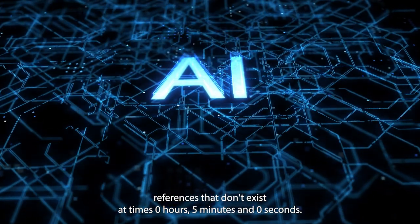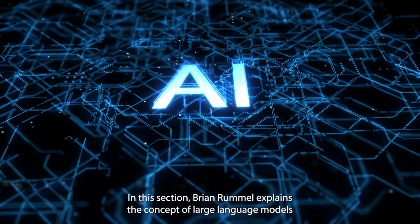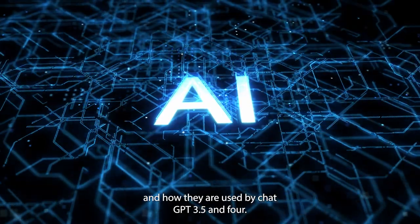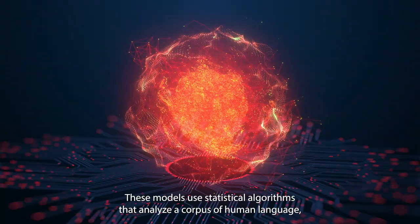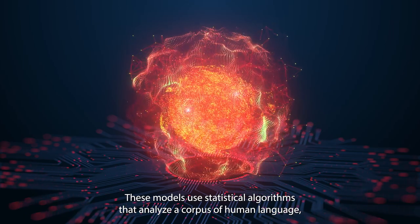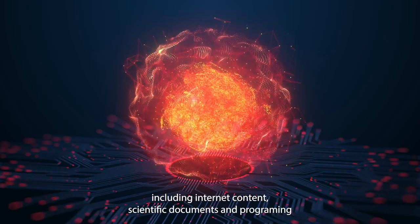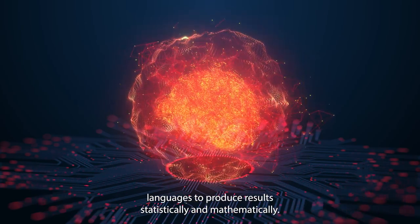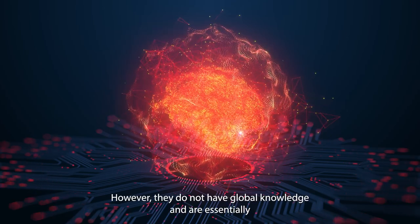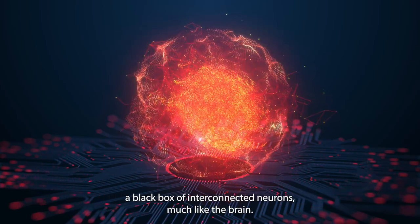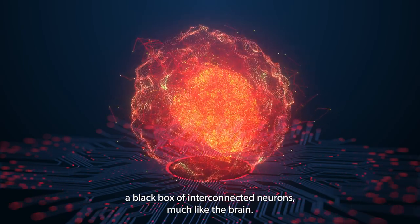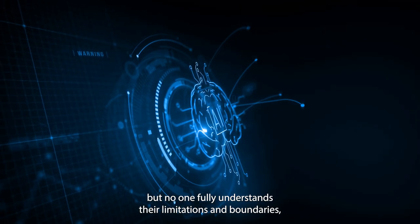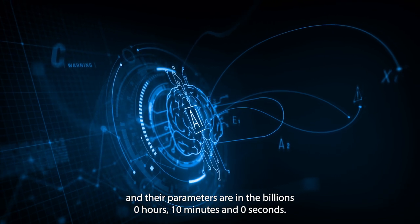Brian Romelli explains the concept of large language models and how they are used by chat GPT 3.5 and 4. These models use statistical algorithms that analyze a corpus of human language, including internet content, scientific documents, and programming languages to produce results statistically and mathematically. However, they do not have global knowledge and are essentially a black box of interconnected neurons, much like the brain. Romelli notes the incredible accuracy of these models, but no one fully understands their limitations and boundaries, and their parameters are in the billions.